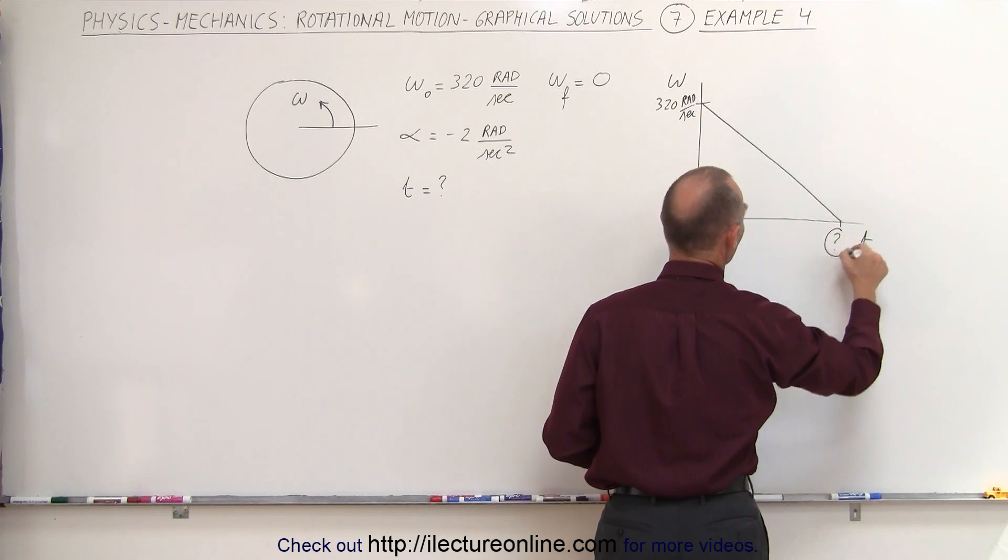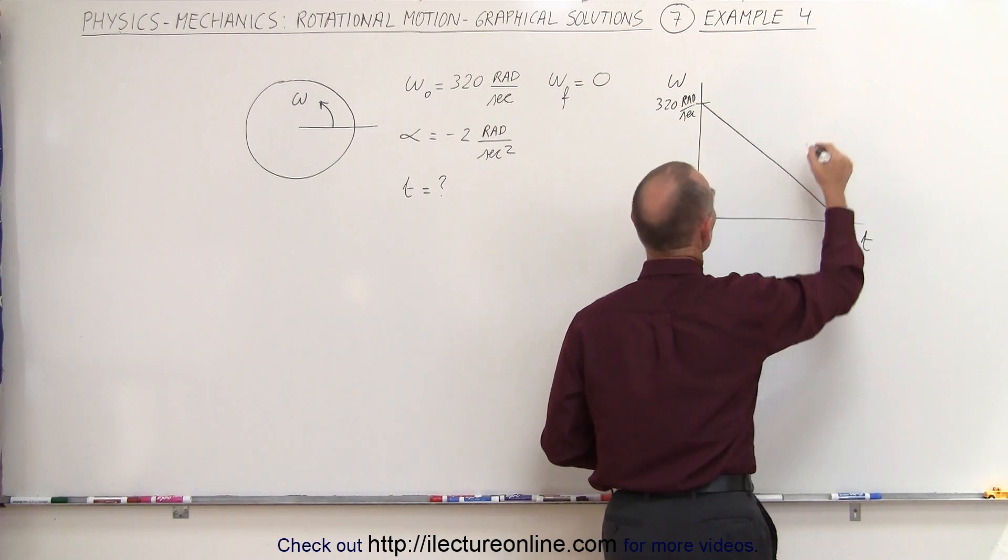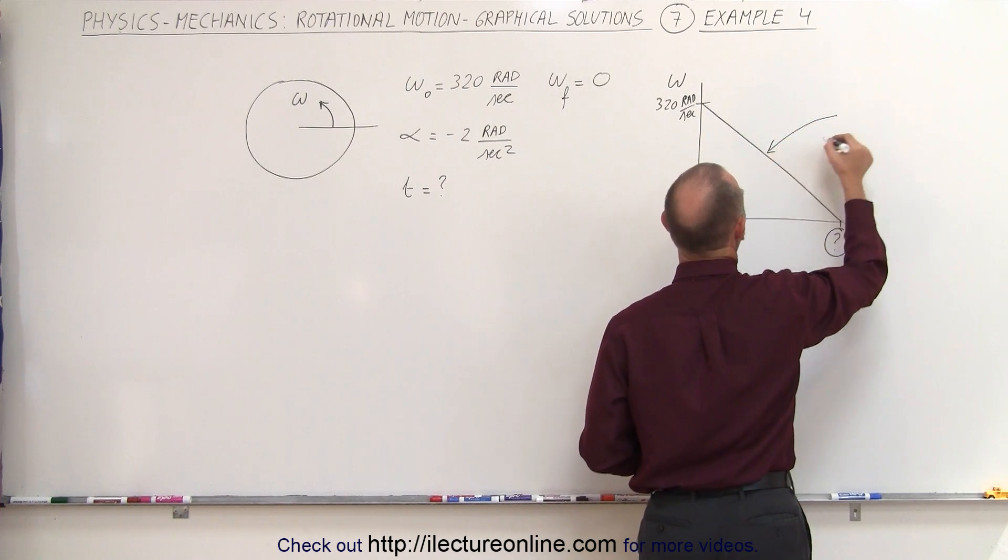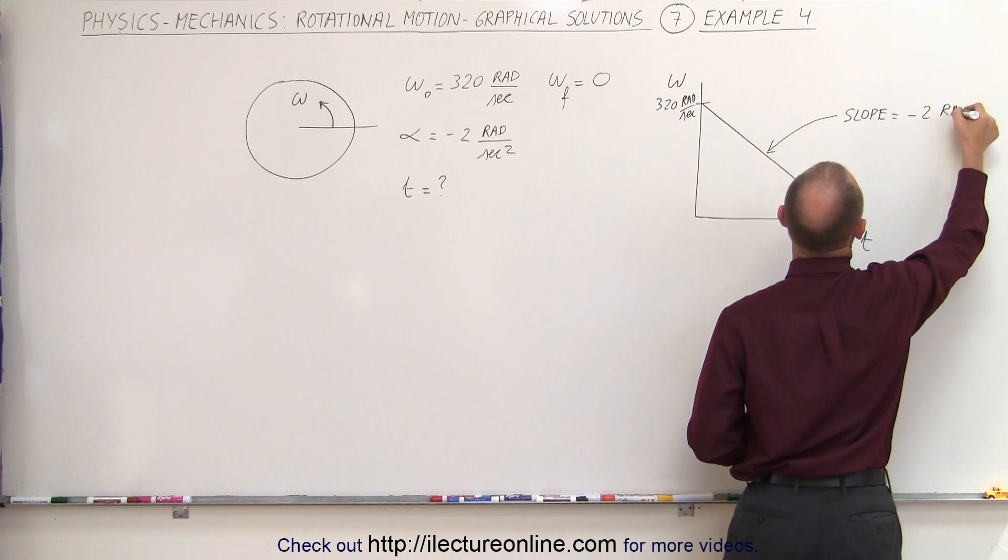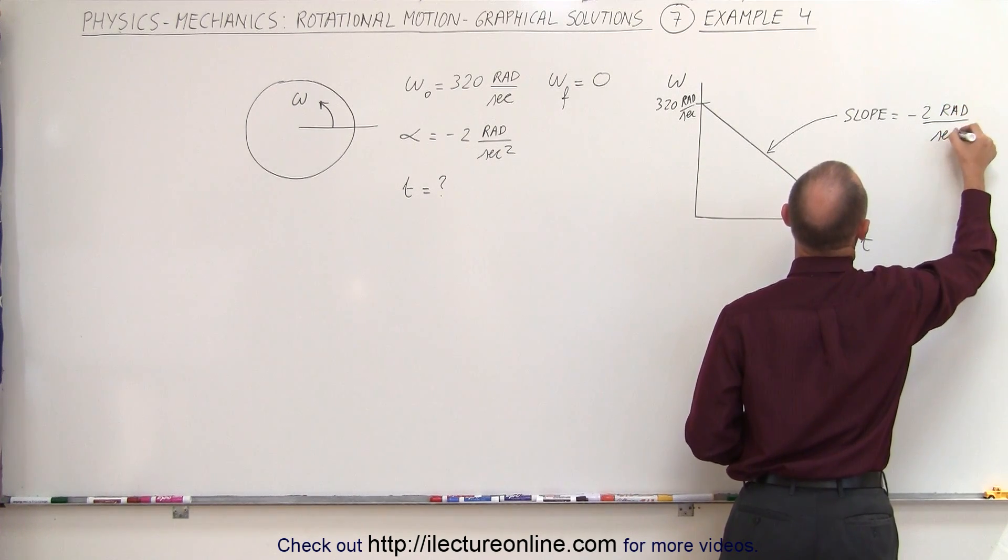We don't know what that is. That's the question mark, how much time has elapsed, but they do tell us that the acceleration, which is the slope, is equal to minus 2 radians per second squared.